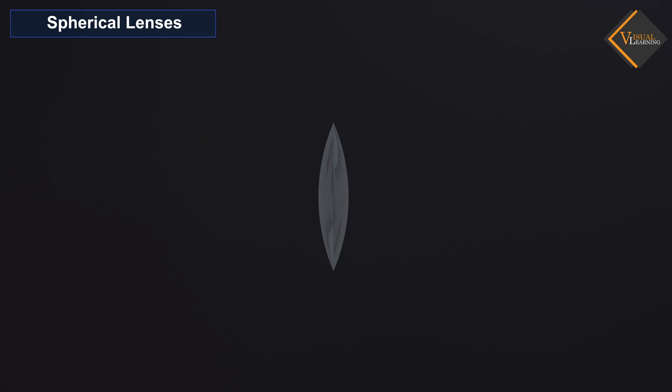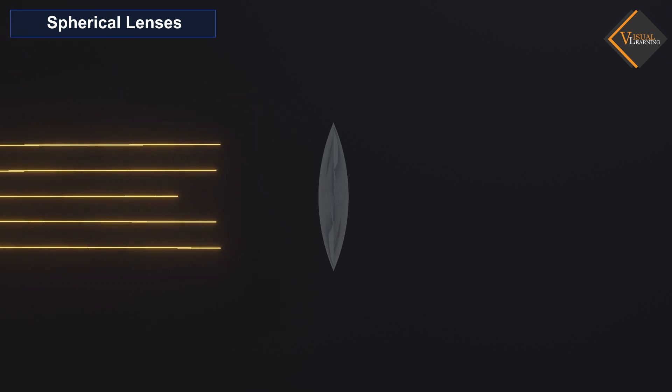It is an optical device through which the rays of light converge or diverge before transmitting. A lens produces its focusing effect because light travels more slowly in the lens than in the surrounding air.